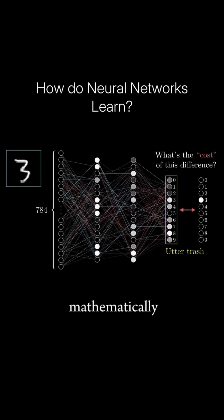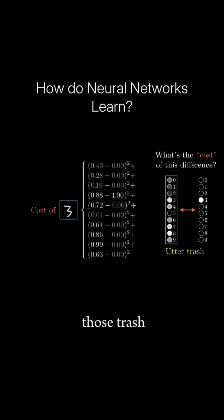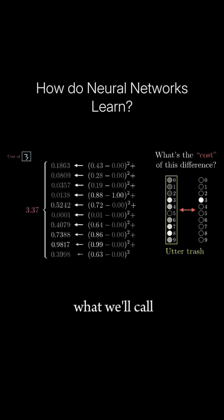To say that a little more mathematically, what you do is add up the squares of the differences between each of those trash output activations and the value that you want them to have, and this is what we'll call the cost of a single training example.